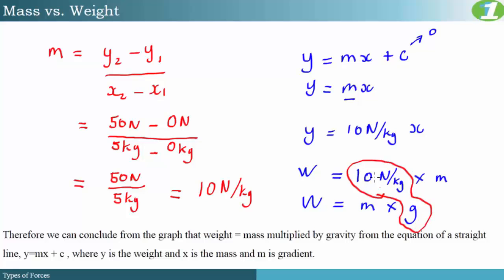So 10 N/kg is the rounded approximate value we use for acceleration due to gravity. We can therefore conclude that weight equals mass multiplied by gravity. That takes us to the end of this segment — see you guys in the next video.